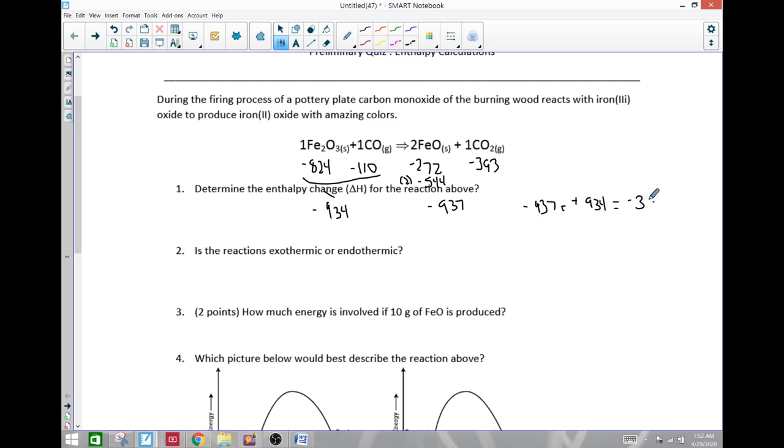And negative 544 plus negative 393 is negative 937. So negative 937, and then we're going to take the products minus reactants, so it's going to be negative 937 minus negative 934. It's like adding, so we're going to get a pretty small number here, so it's like 3, and it's going to be negative 3. That would be kilojoules per reaction cycle.